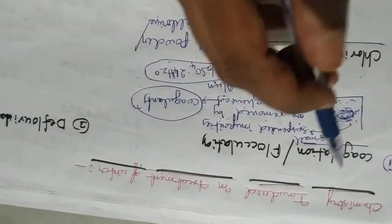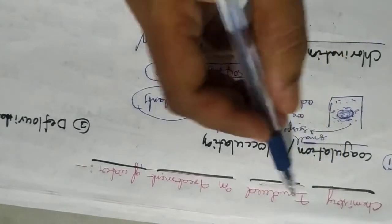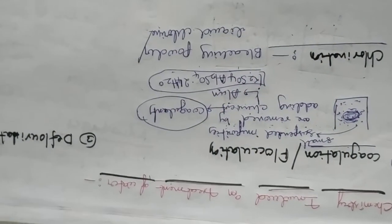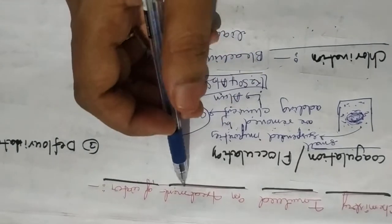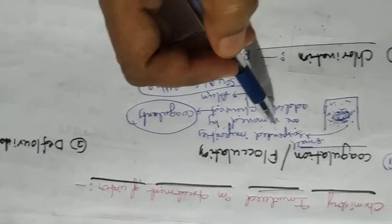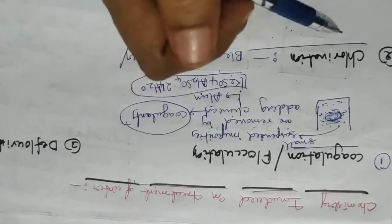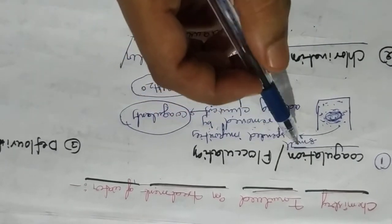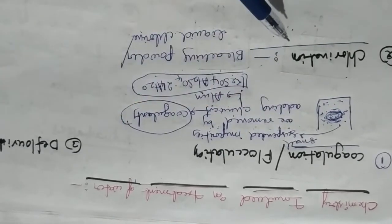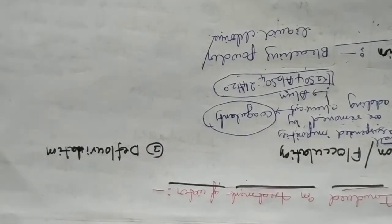Good morning, my dear friends. In this class we will discuss about the chemistry involved in the treatment of water. Water purification process is a technique where chemistry is involved in the process. There are three reactions: coagulation, chlorination, and defluoridation.